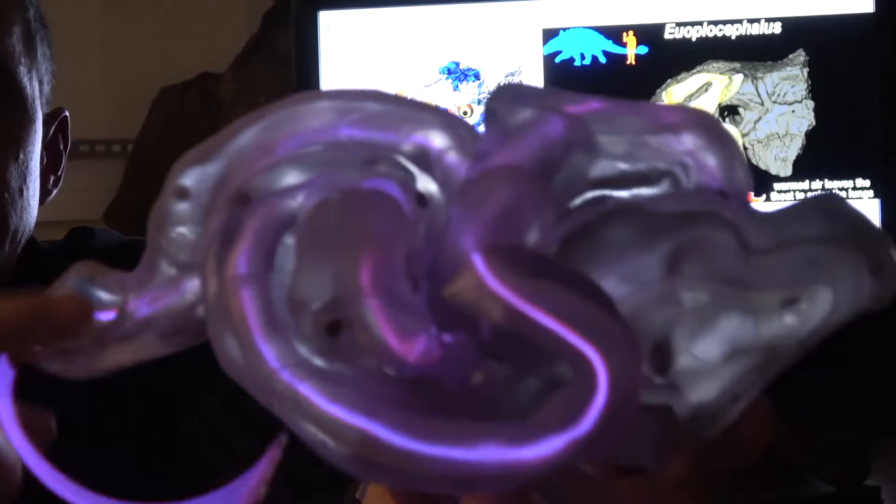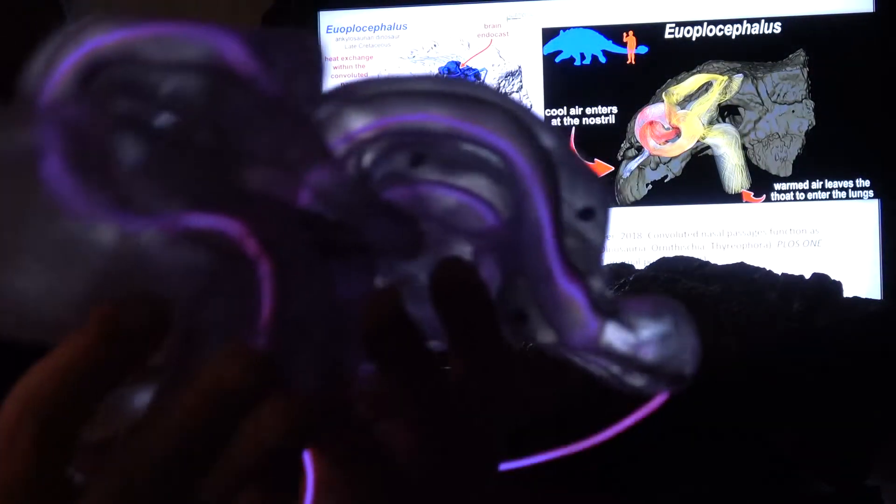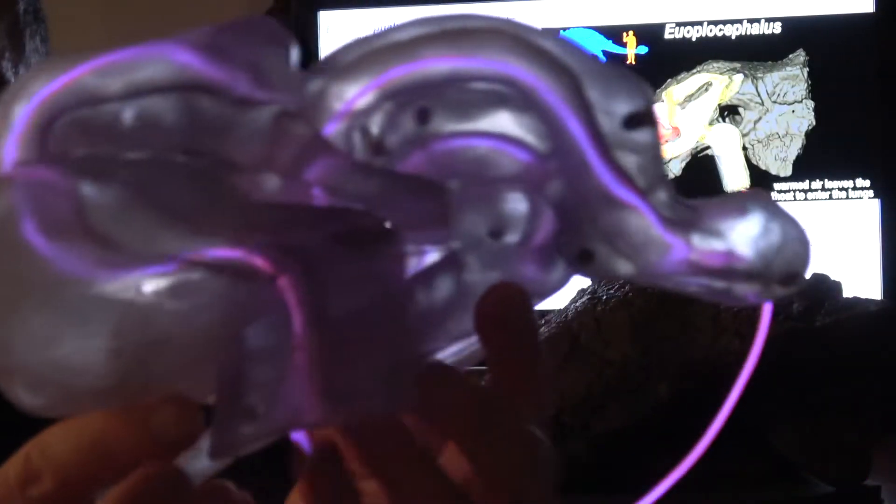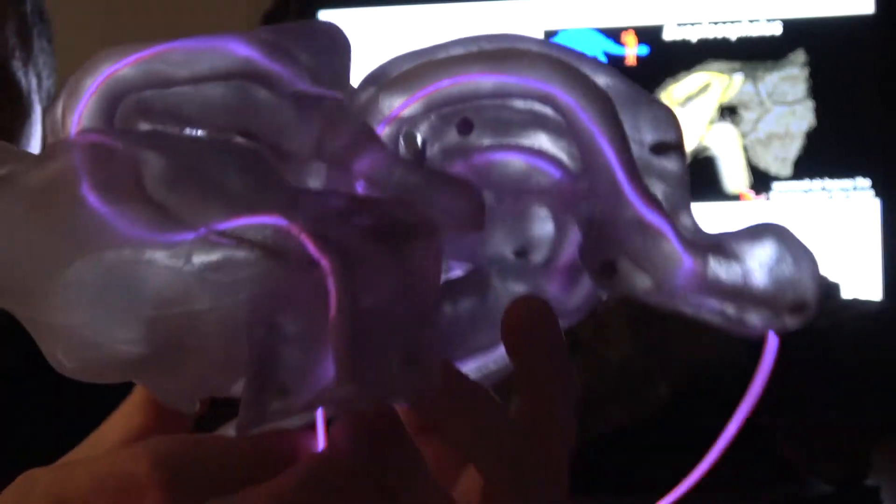So this is the front over here. This is where the nostril is. You can see the airway spinning around in there. If I turn around and look at the internal side, you can see it right in here. And this part right in here is actually the choana where the nasal cavity opens up into the snout.